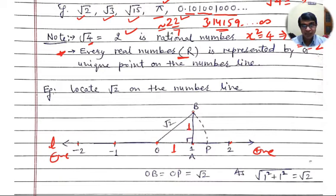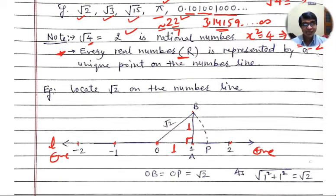Now join O to B. Triangle OAB is a right angle triangle because angle A is 90 degrees. If OA is 1 unit and AB is 1 unit, then joining OB gives a length of root 2 units. To locate this on the number line, take O as center and OB as radius, and draw an arc. This arc intersects the number line at point P. So OB equals OP, and that represents root 2 units on the number line.